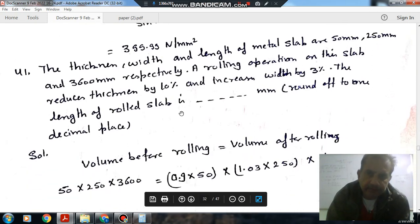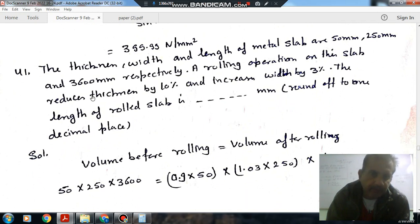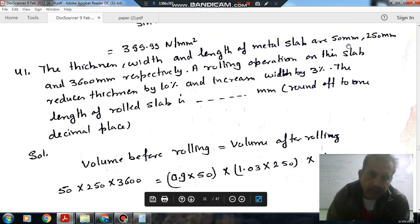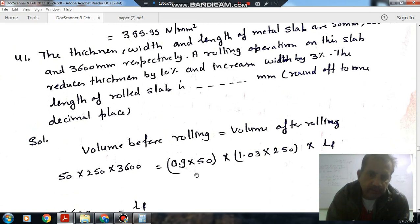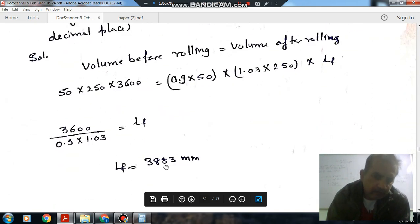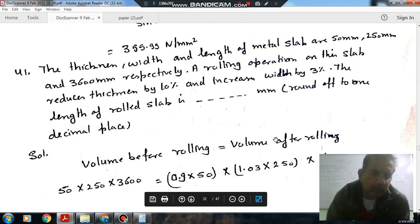Question 3: The thickness, width and length of metal slab are 50mm, 250mm and 3600mm respectively. A rolling operation on the slab reduces the thickness by 10 percent and increases the width by 3 percent. The length of the rolled slab is blank mm, round off to one decimal place. So volume before rolling is equal to volume after rolling. Volume before rolling is 50 into 250 into 3600, and volume after rolling is: as slab thickness is reduced by 10 percent, so that is 0.9 into 50, and width increased by 3 percent so 1.03 into 250, and length is L.